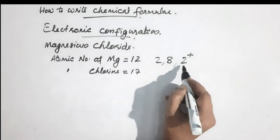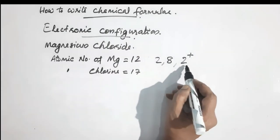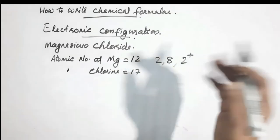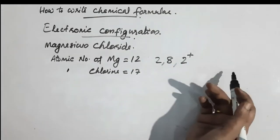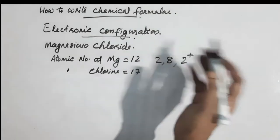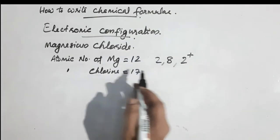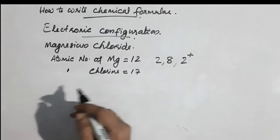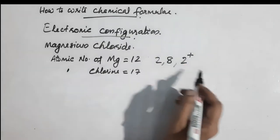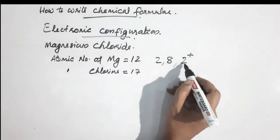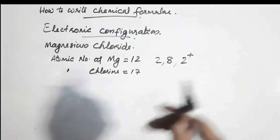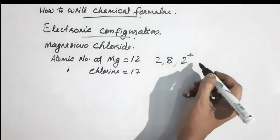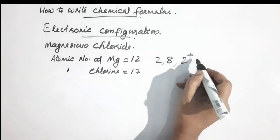This electronic configuration gives stability. The valency is determined by the outer shell electrons. The electrons in the outermost shell are equal to 2 for magnesium, and 7 for chlorine.